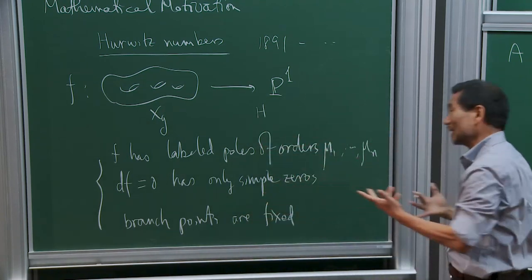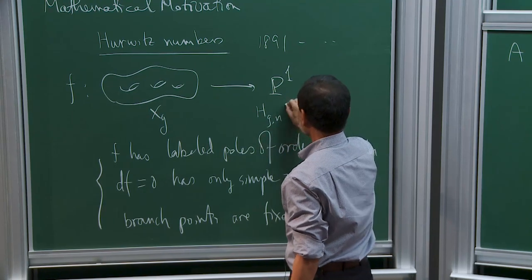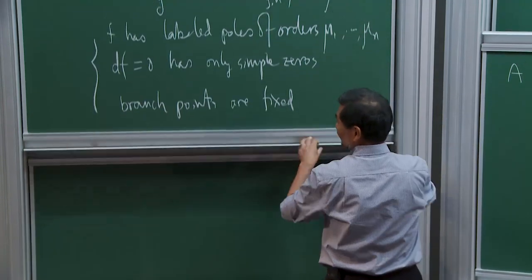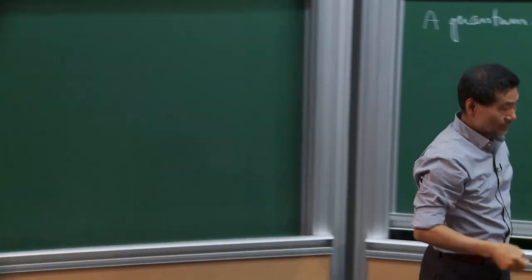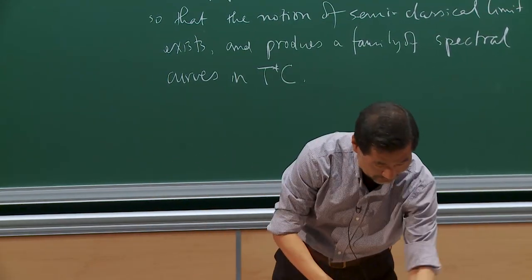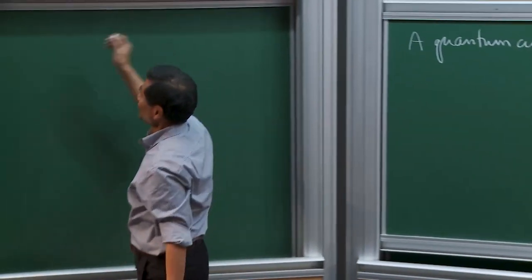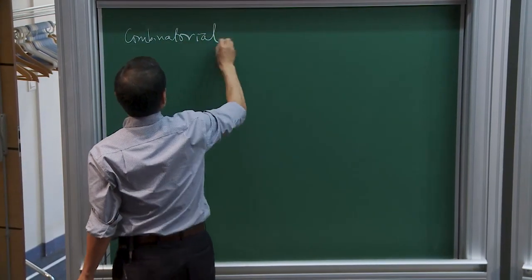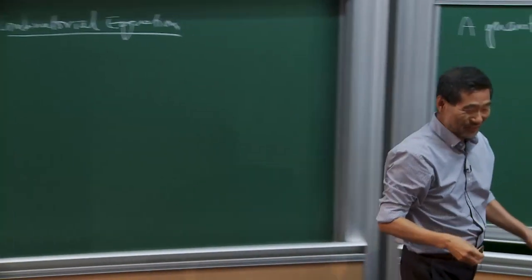One more condition: if you impose only these, the space of all meromorphic functions is a finite dimensional manifold. To make it zero-dimensional, we require that the image of the critical points — namely the critical values, which are the branch points in P^1 — are fixed. Then this quantity becomes a finite rational number, after dividing by the automorphism group.